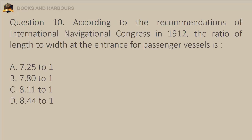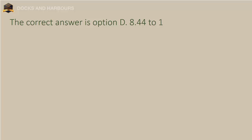Question 10. According to the recommendations of the International Navigational Congress in 1912, the ratio of length to width at the entrance for passenger vessels is: a. 7.25 to 1, b. 7.80 to 1, c. 8.11 to 1, d. 8.44 to 1. The correct answer is option D: 8.44 to 1.